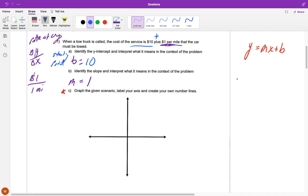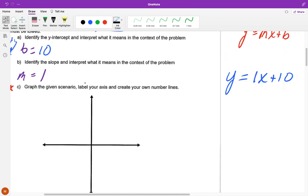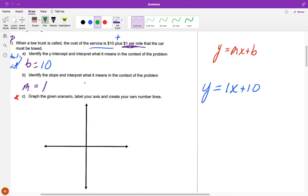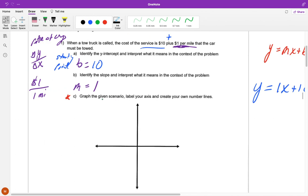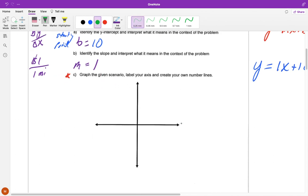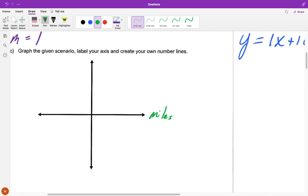So if I were to write this as an equation, y equals 1x plus 10. We don't have to write the 1 in front of the x, you could just write x. And now it's saying given the scenario, label our axis and graph. In this case, our x is our independent variable. Our miles are our independent variable. So we would label that x-axis as miles, and then the y-axis I'm going to label as total cost, because that's how much we're going to pay depending on the miles.